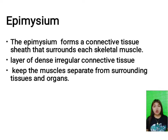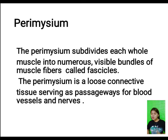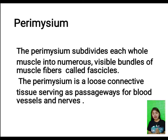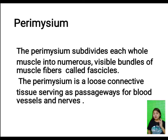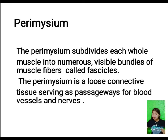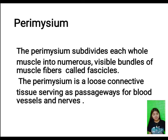The perimysium subdivides each whole muscle into numerous visible bundles of muscle fibers called fascicles. It is a loose layer of connective tissue that serves as a passageway for the blood vessels and nerves supplying each fascicle.